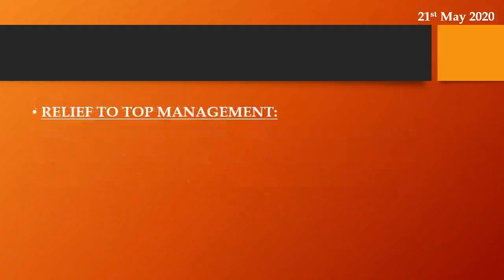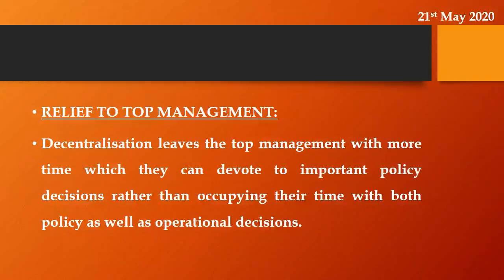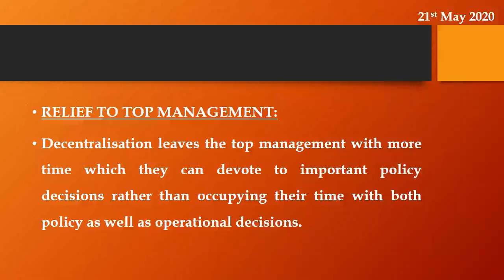Next comes: relief to top management. Top management has a large amount of work to complete — starting from planning, organizing, and then routine work. If they involve themselves in all routine work, they will not be able to stay focused on growth and future planning. By giving away decision-making authority to subordinates, they get relief from daily operative work and can truly think about new planning for the growth of the organization.